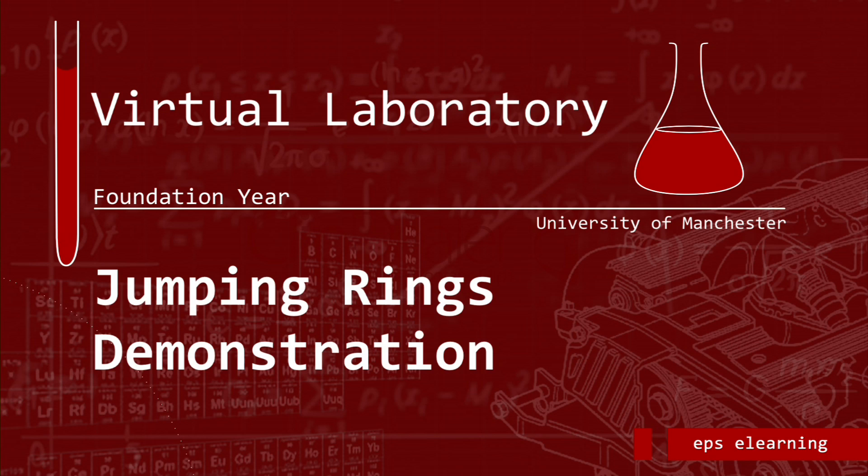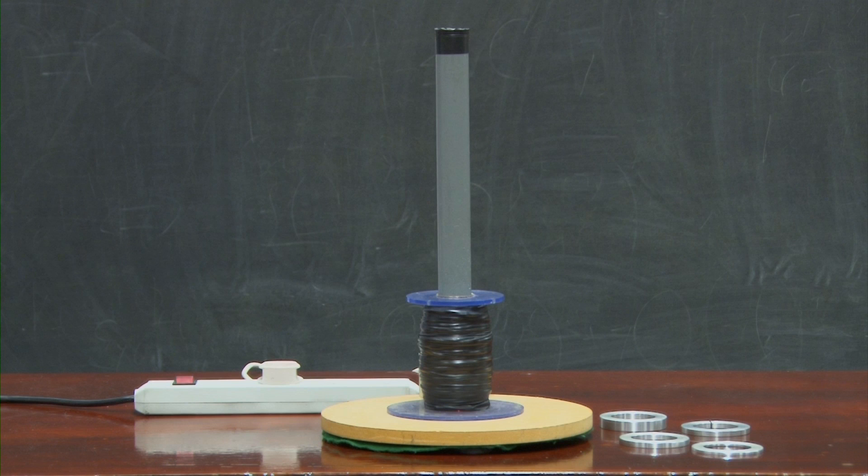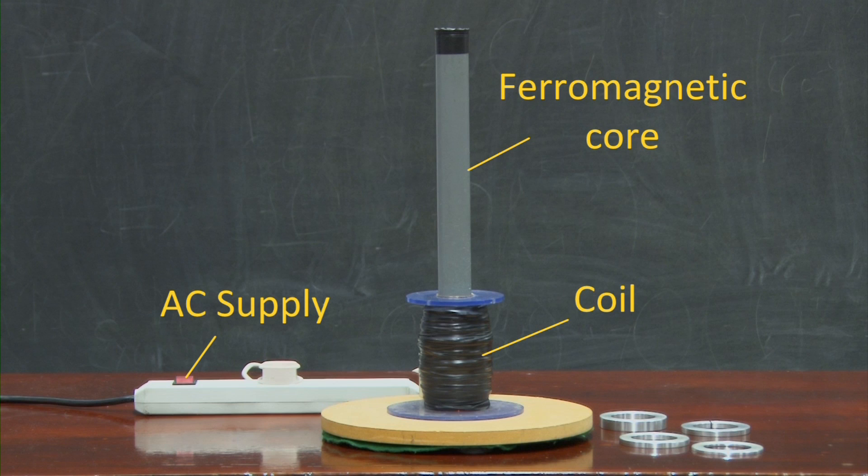This short clip is a demonstration of Faraday's law of electromagnetic induction and of Lenz's law. The equipment consists of a coil of copper wire. It has a ferromagnetic core extending out from the center of the coil.